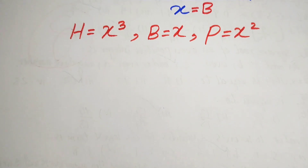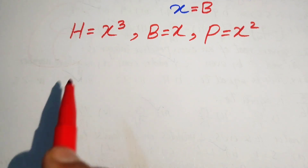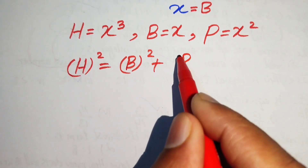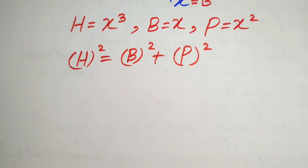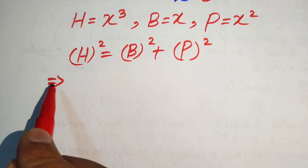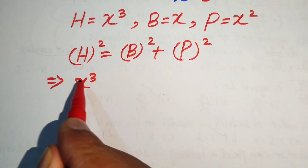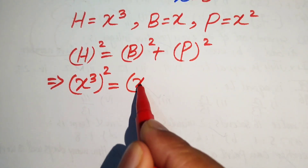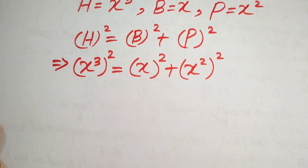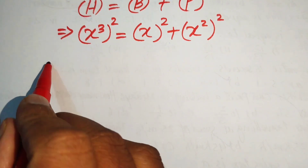One more thing you know about the right triangle is that the Pythagorean theorem holds. It is stated as: hypotenuse squared equals base squared plus perpendicular squared. Now we use this Pythagorean theorem to find the value of x. We substitute the values: h is x cubed, b is x, and p is x squared, giving us (x cubed) squared equals x squared plus (x squared) squared.